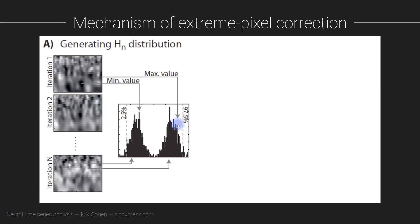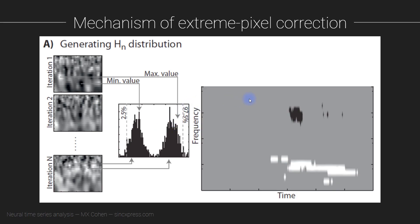You take these two thresholds and apply them to your actual observed data. Any pixel with a statistic value in the map that falls between the 2.5th percentile and the 97.5th percentile gets turned to zero. Whatever is left is accepted as being statistically significant.